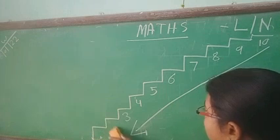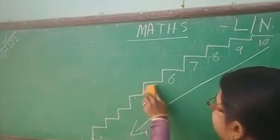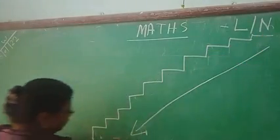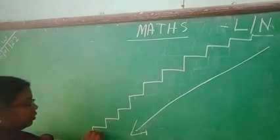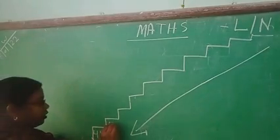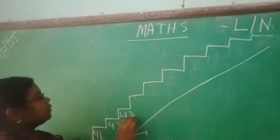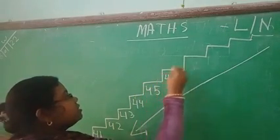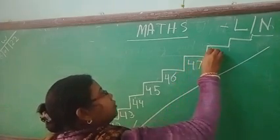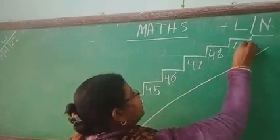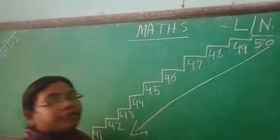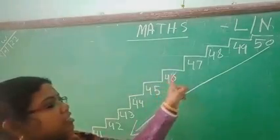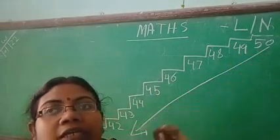If I write the numbers — you have done the backward counting up to 50. So if I write here: 41, 42, 43, 44, 45, 46, 47, 48, 49, 50. When we are counting the numbers from here — 41, 42, 43, 44, 45, 46, 47, 48, 49, 50 — the numbers we are counting forward.